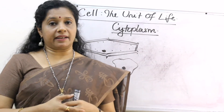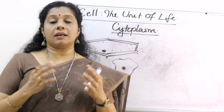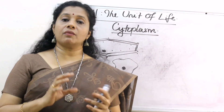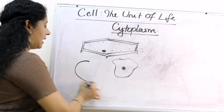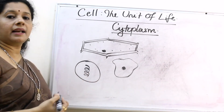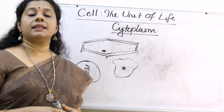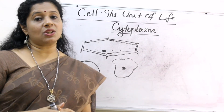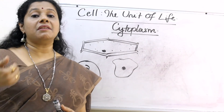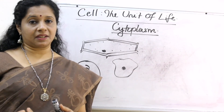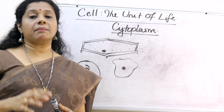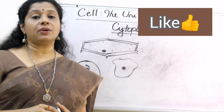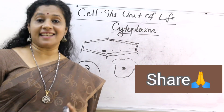For example, viruses do not have any compartmentalization or membranes. Their body consists of only a protein coat and one DNA or RNA inside. We do not consider them as living because they do not show any characteristics of living organisms until and unless they infect a living organism. So membrane-bound organelles are present in all living cells.